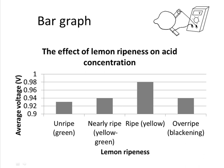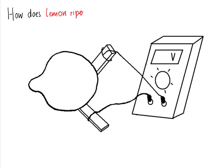This bar graph summarizes data that was gathered in response to the question: how does lemon ripeness affect acid concentration? What the person did was they took a lot of lemons and into each lemon they placed a copper rod and a zinc rod.